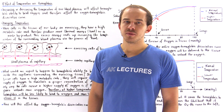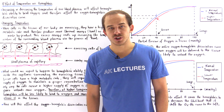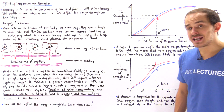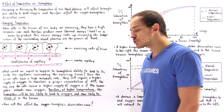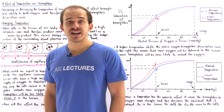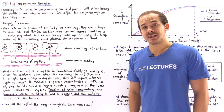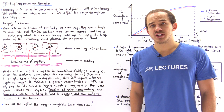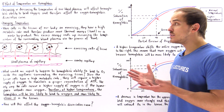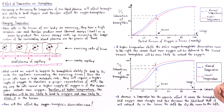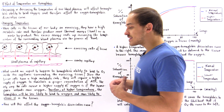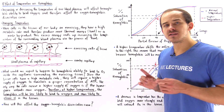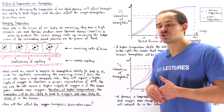Changing the pH of our blood plasma is not the only factor that influences hemoglobin's ability to bind to oxygen. Another factor is temperature. Increasing or decreasing the temperature of our blood plasma can affect hemoglobin's ability to bind to oxygen, and therefore affect the oxygen-hemoglobin dissociation curve — and this will be the focus of this lecture. Before we discuss how temperature affects hemoglobin, let's discuss where this increase in temperature actually comes from.